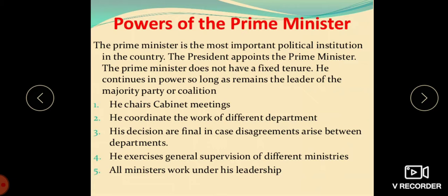Regarding the Council of Ministers: Article 75 of our Constitution states that the Prime Minister shall be appointed by the President, and the other Ministers shall be appointed by the President on the advice of the Prime Minister. By convention, the President has to accept the choice of the Prime Minister in matters of appointment and dismissal of Ministers. Normally, only members of Parliament are appointed as Ministers. If a non-member is appointed as a Minister, he must be elected or nominated to Parliament within six months from the date of appointment; failing this, he will have to resign.